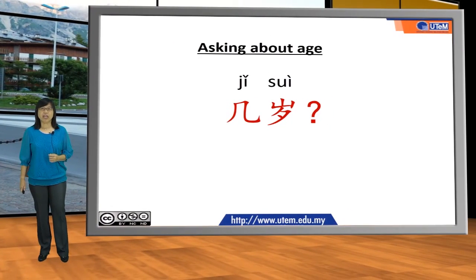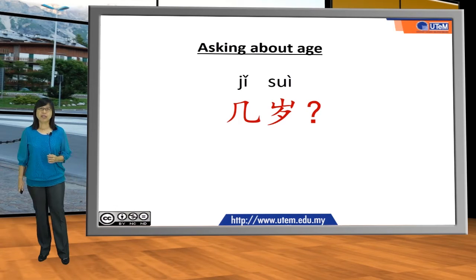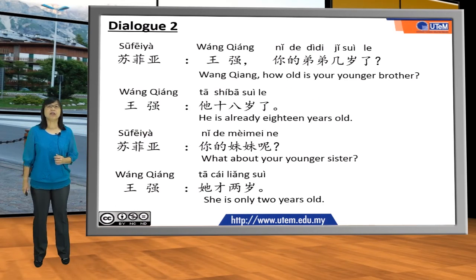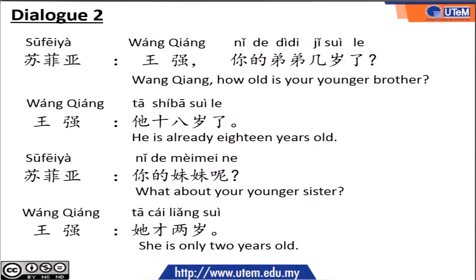When asking about age, the key phrase is 几岁. Let's see the conversation between Sophia and 王强. Sophia asked 王强 about his brother's age. She said: 王强, 你的弟弟几岁了? — Wang Qiang, how old is your younger brother? 王强 said: 他十八岁了. — He is already 18 years old. Sophia asked again: 你的妹妹呢? — How about your younger sister? 王强 responded: 他才两岁. — She is only two years old.